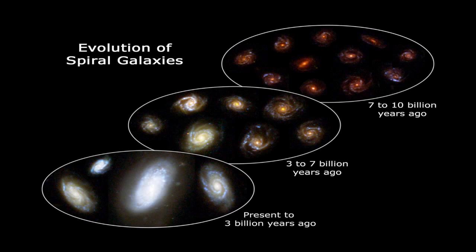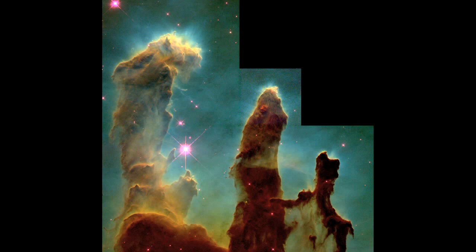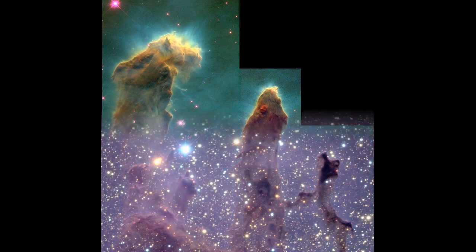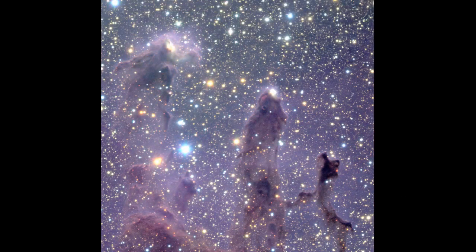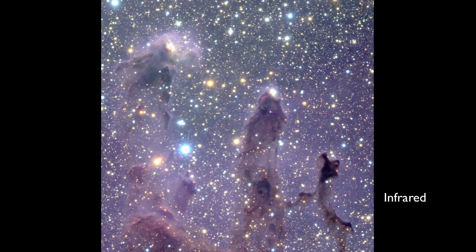But this isn't the only area where we know Webb will provide breakthroughs. This is Hubble's image of the Eagle Nebula, the famous Pillars of Creation photo. Inside these pillars of gas and dust, new stars are forming. But we can't see them, because the dust blocks visible light. But it doesn't block infrared anywhere near as well. Infrared light can beam through the nebula, and if we can see it, we can see the newly formed stars within.